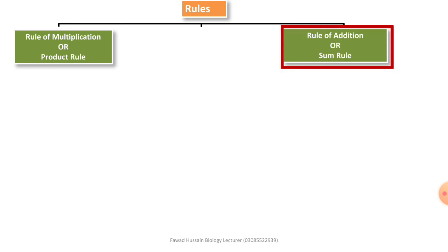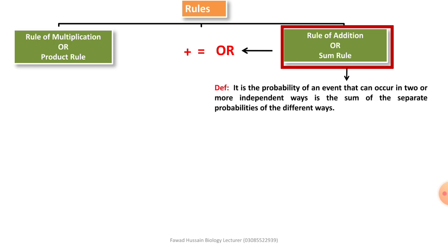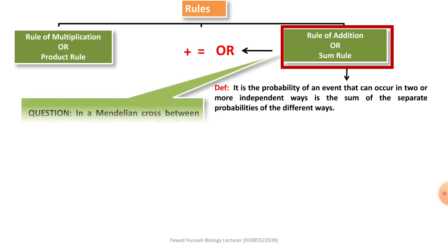The next is the rule of addition or sum rule. जिस तरह product rule में 'and' आता था, same यहाँ sum rule में — जिस problem में 'or' आए तो आपके mind में आना चाहिए sum rule। 'Or' equal to 'plus'। जहाँ पर 'or' आएगा, आपके mind में plus आना चाहिए और साथ में sum rule। Definition: the probability of an event that can occur in two or more independent ways is the sum of the separate probabilities of the different ways.